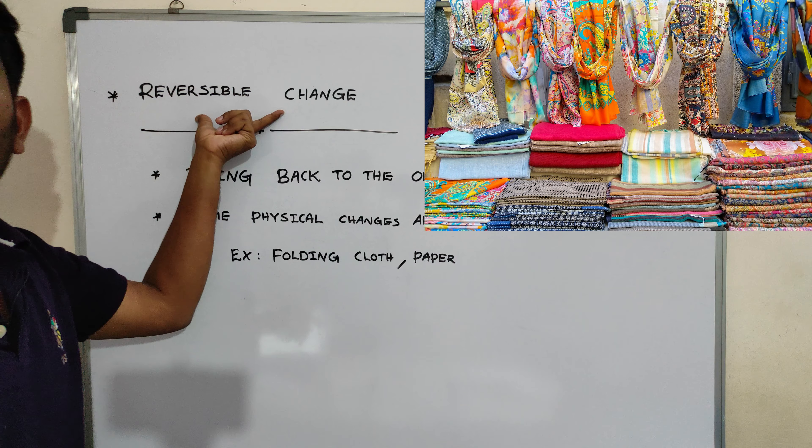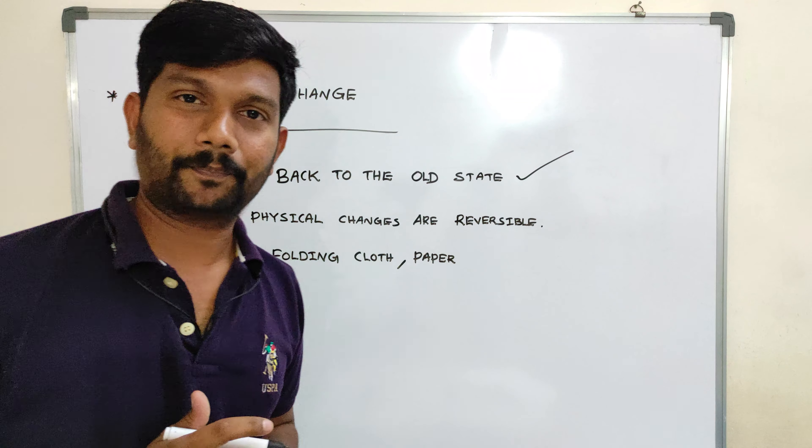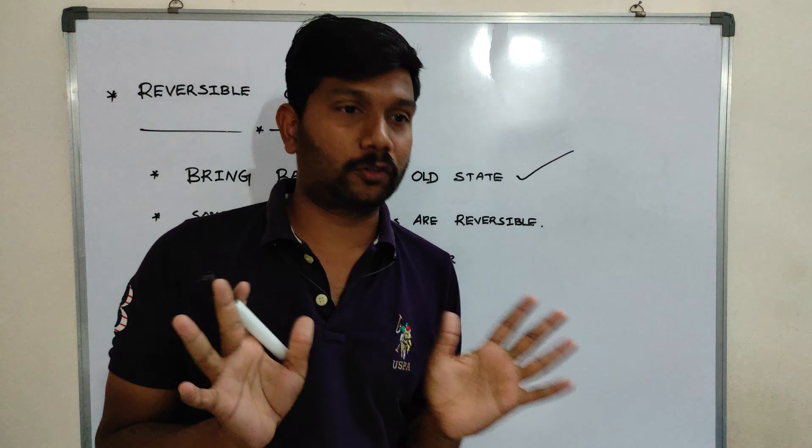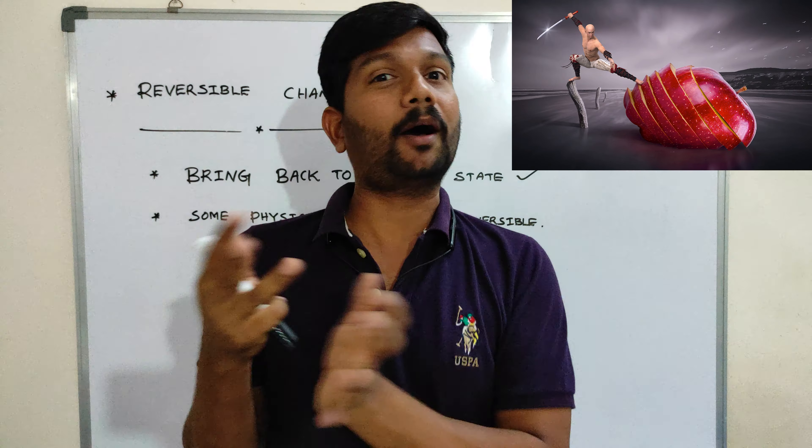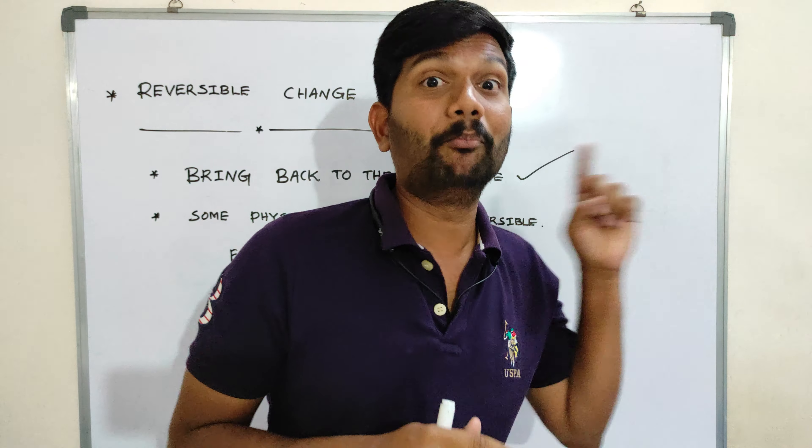The second important point: some physical changes are reversible in nature, but we cannot say all physical changes are reversible. For example, once you cut an apple into two pieces, you cannot bring it back to the same original state. That is why I mentioned that only some physical changes are reversible. One more example: ice can change into water, and water can be kept in the freezer to produce ice again. So we can say some physical changes are reversible in nature.